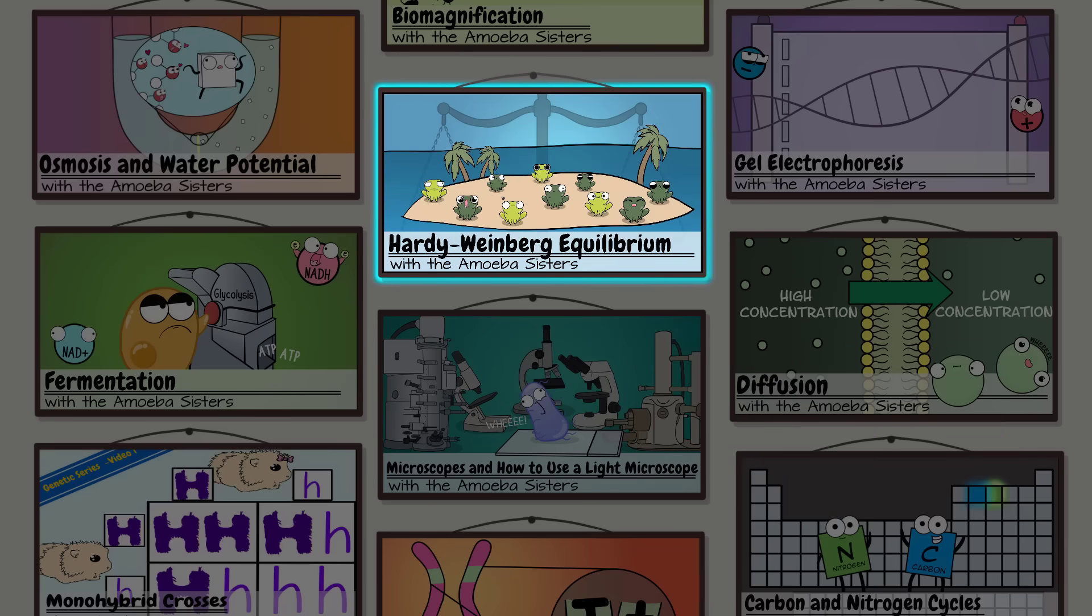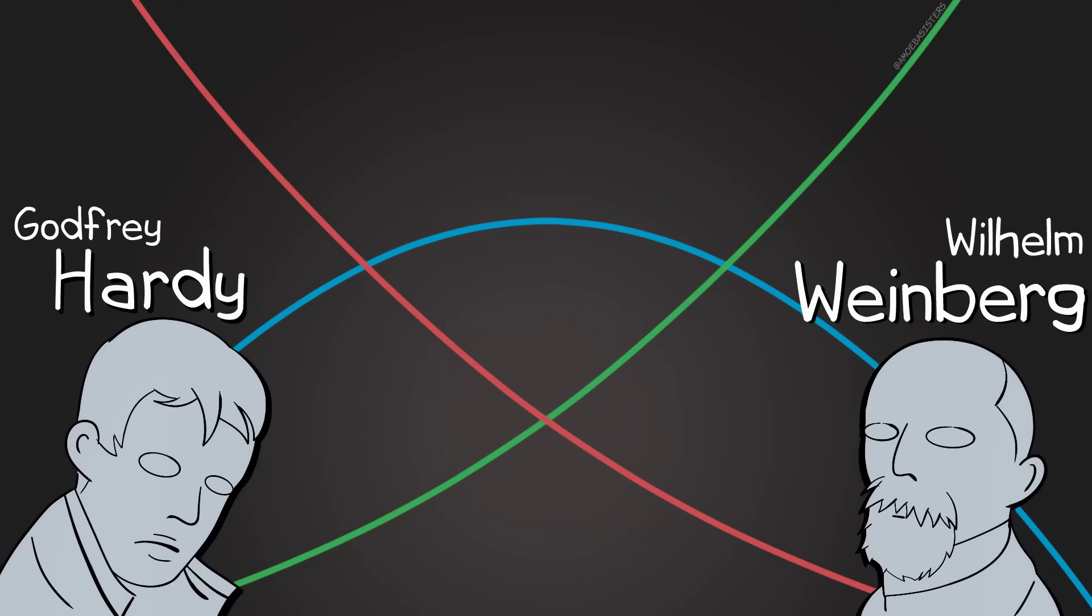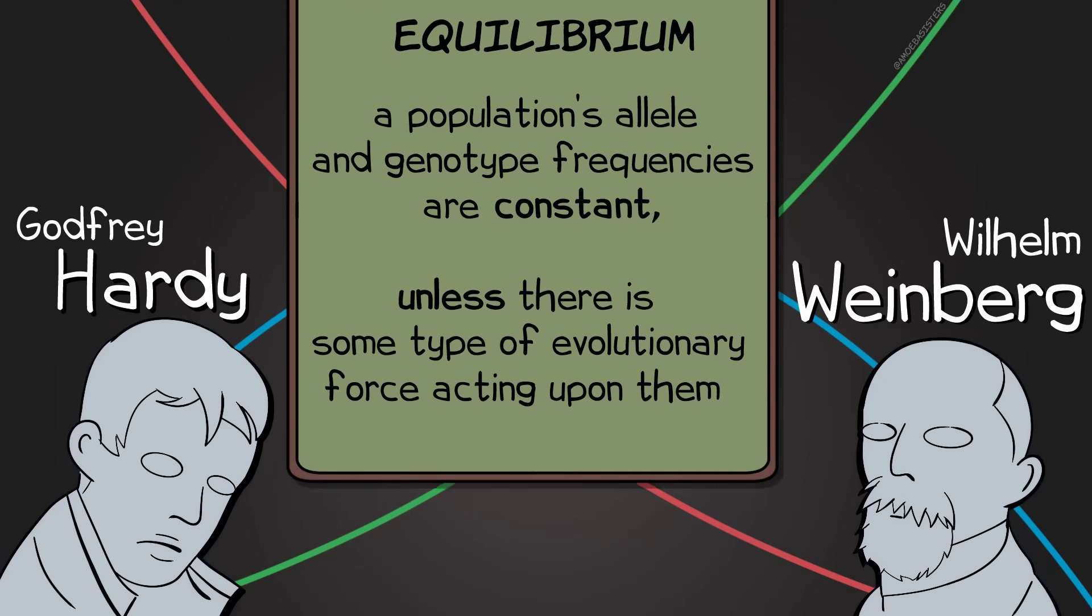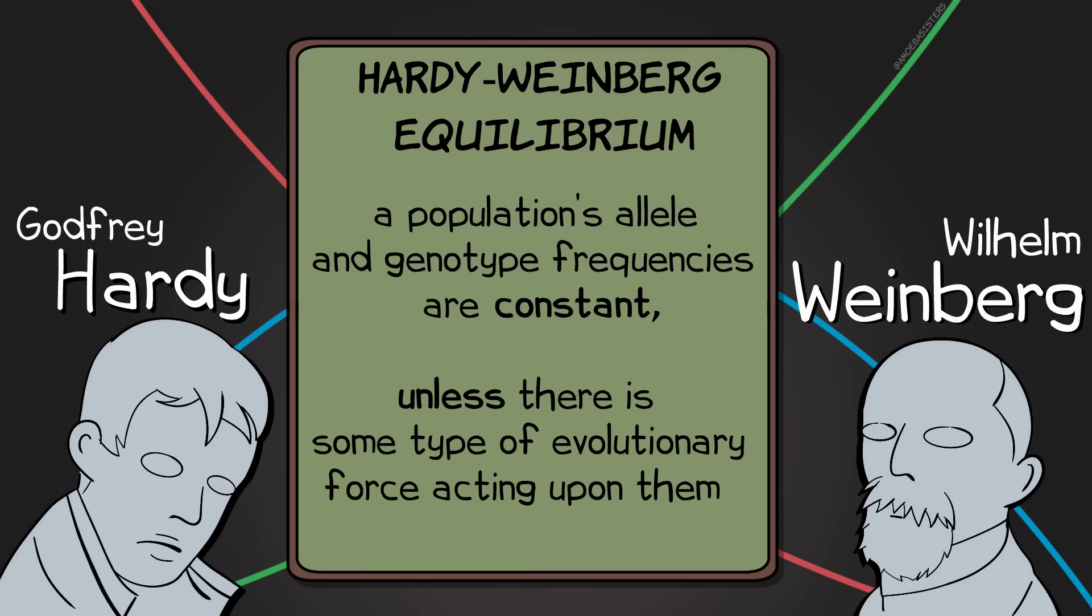...is the Hardy-Weinberg equilibrium. It got its name from a mathematician and a physician and it states that a population's allele and genotype frequencies are constant unless there is some type of evolutionary force acting upon them.